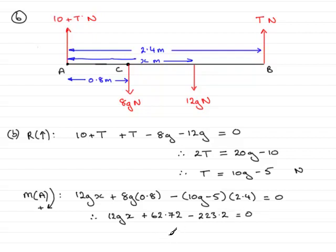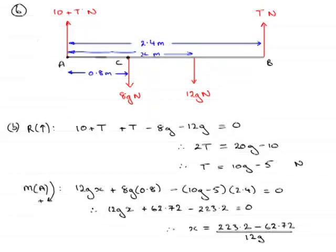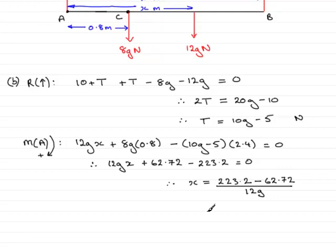And rearranging this for X, X will equal, well, we can add 223.2 to both sides, so that's 223.2. Subtract 62.72 from both sides, so 62.72. And that would leave us with 12GX. But if I divide by 12G, then we're left with the X. So doing that on a calculator, I make that 1.364 and so on, and rounding that to one decimal place means that X is 1.4 meters to one decimal place.